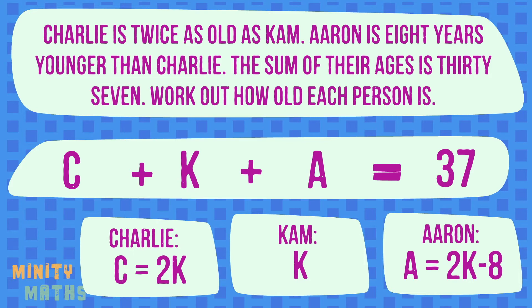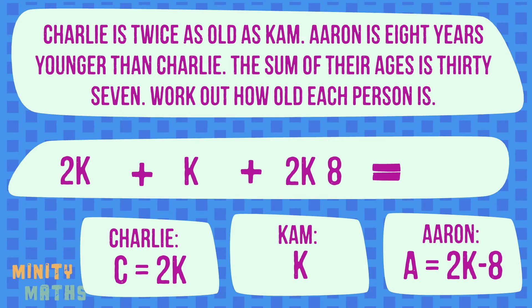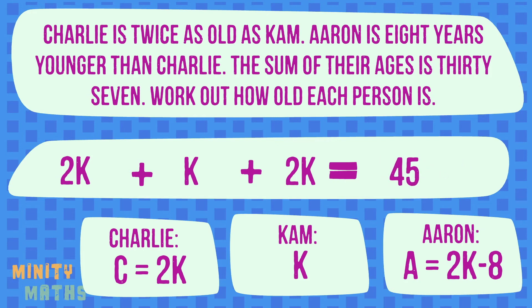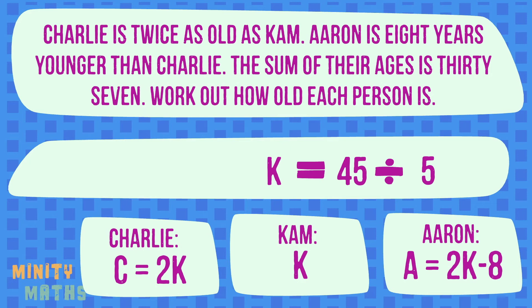Now let's substitute these new expressions into our original equation. As you can see we now only have one variable to work with rather than three. This means we can actually solve the equation to find out k — in other words Cam's age. Once we know Cam's age we can use it to work out the rest. Rearrange the equation to collect all the k variables together. Now use this to find out the other two ages.